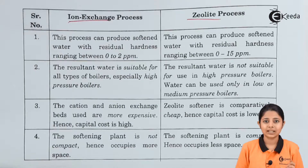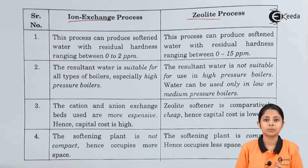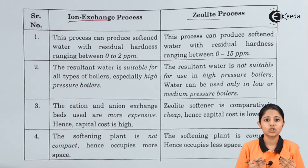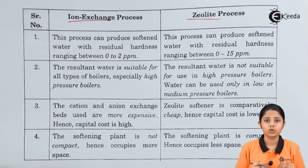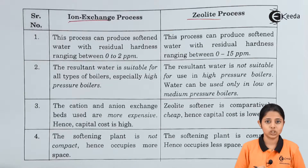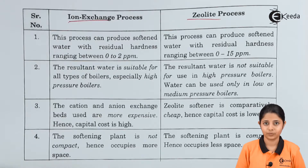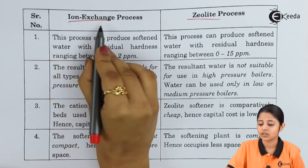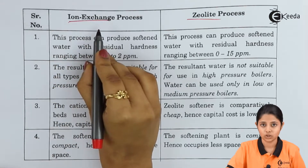The cationic bed is the positive ion bed; the anionic bed is the negative ion bed. They exchange their own ions — ions that do not contribute to hardness — and in exchange take away all the impurities that actually cause hardness of water. That is the main process of ion exchange.